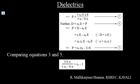Further, D is equal to epsilon-naught E plus P. (Equation 4) This implies P is equal to D minus epsilon-naught E, which equals epsilon-naught epsilon_R E minus epsilon-naught E, since D equals epsilon-naught epsilon_R E. Therefore P equals epsilon-naught (epsilon_R minus 1) E. (Equation 5)